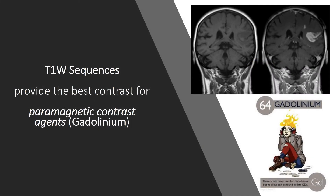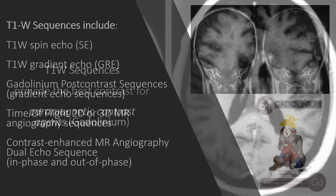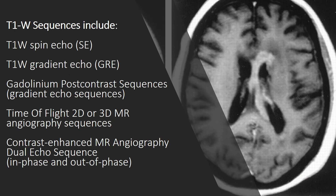T1 weighted sequences provide the best contrast for paramagnetic contrast agents such as gadolinium-containing compounds. T1 weighted sequences include: T1 weighted spin echo, T1 weighted gradient echo, gadolinium post-contrast sequences, time-of-flight 2D or 3D magnetic resonance angiography sequences, contrast-enhanced magnetic resonance angiography, and dual echo sequences — in-phase and out-of-phase.